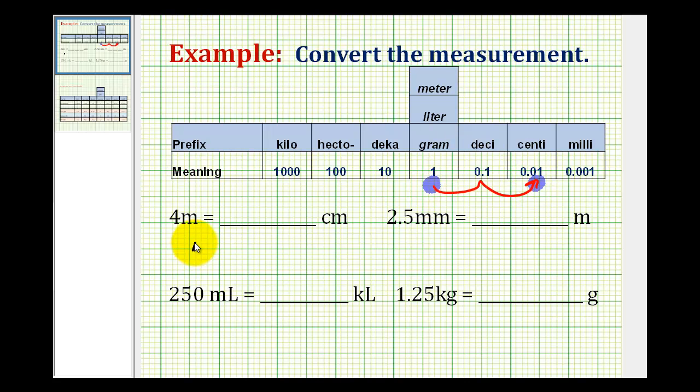So we can just take the number four with the decimal place here, and move the decimal point two places to the right. One, two, which would make four meters equal to 400 centimeters.